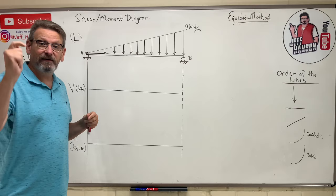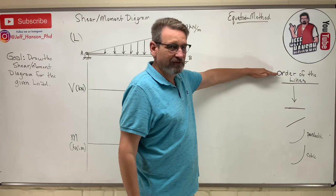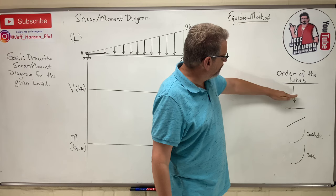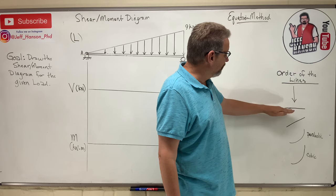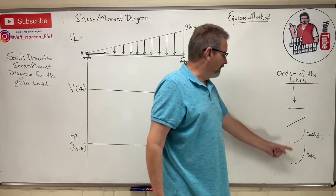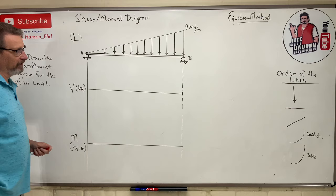The only case is this: when you have on your V diagram a parabola, a parabolic curve, and that curve crosses this axis, then you've got to use the equation method. The graphic method will not work. Generally that happens when you have a triangular distributed load on your load diagram. Remember from our last video, the order of the lines - how these graphs are related. This is the integral of that graph.